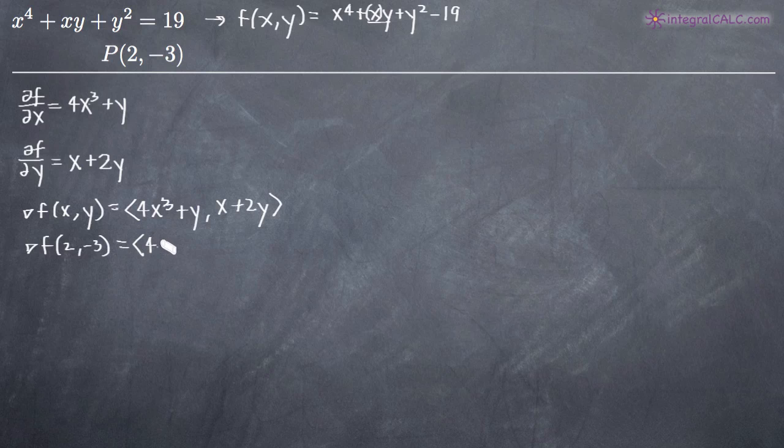When we do that, we'll get 4 times 2 cubed is 8 plus y is actually going to be minus 3 and then we have 2 plus 2 times negative 3. And when we simplify that, we'll get 32 minus 3 is 29 comma 2 plus 2 times negative 3. 2 times negative 3 is 6. 2 plus negative 4 is going to be negative 4.